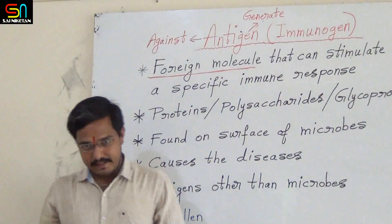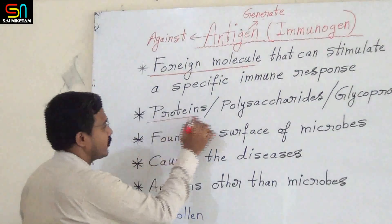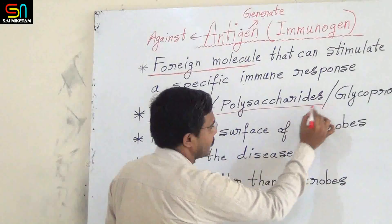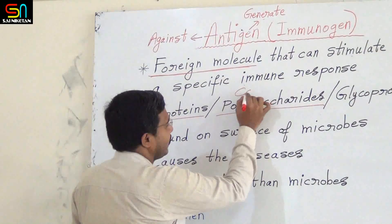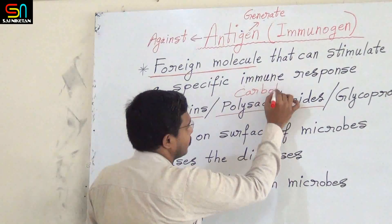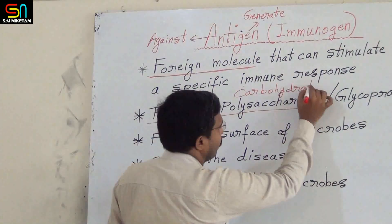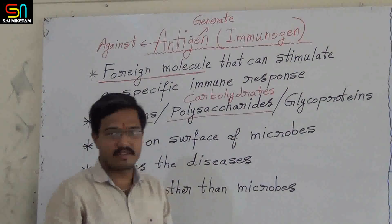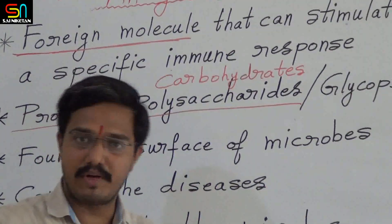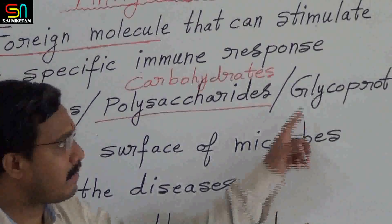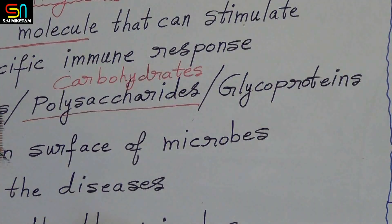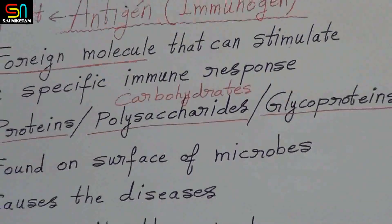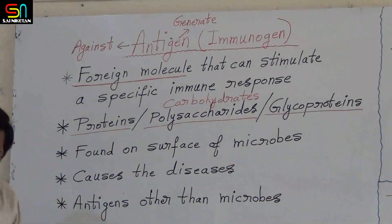Chemically, antigens are proteins, or some antigens are polysaccharides — that is, carbohydrates. Some antigens are made up of carbohydrates, and some other antigens are made up of combinations of protein and carbohydrate, and therefore chemically they are glycoproteins. So chemically, antigens are proteins or polysaccharides or glycoproteins.